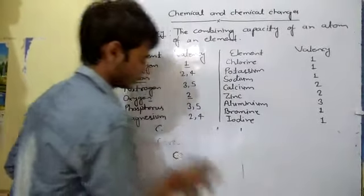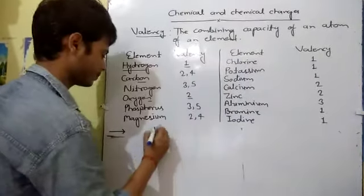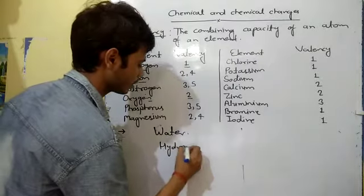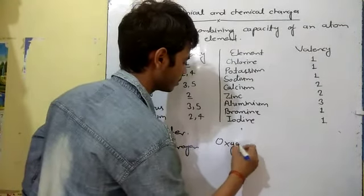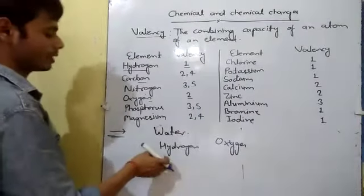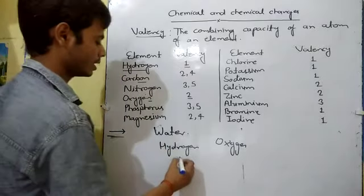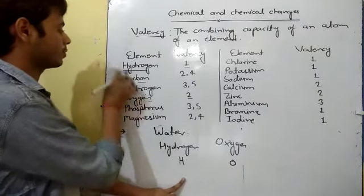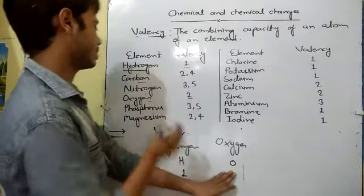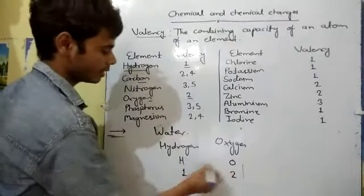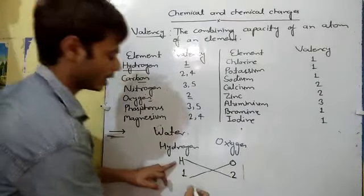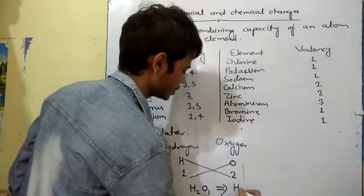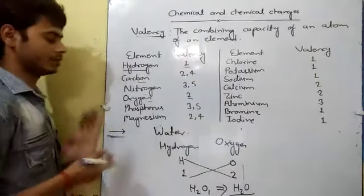We take one more example — water. Water is made up of hydrogen and oxygen. The chemical symbol of hydrogen is H and oxygen is O. The valency of hydrogen is one and the valency of oxygen is two. After that, we crisscross the valencies and write in the subscript. So hydrogen becomes H2 and oxygen becomes O1. Since we do not write 1, the chemical formula of water is H2O.